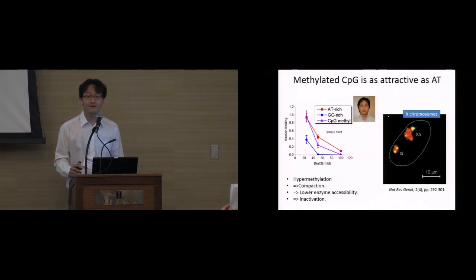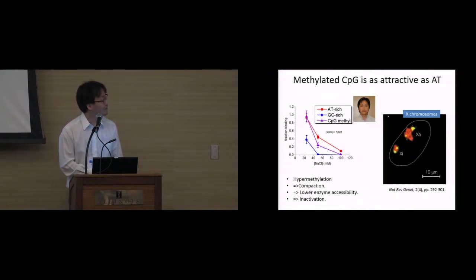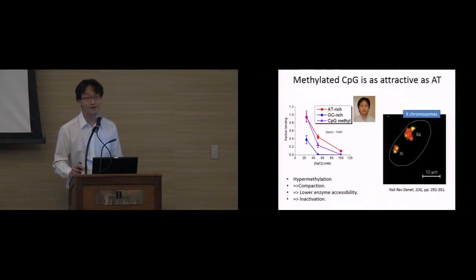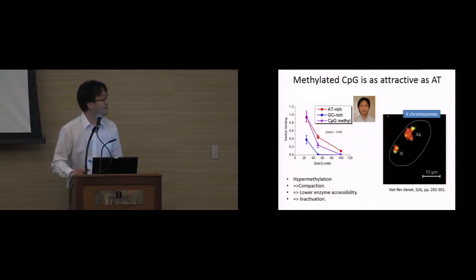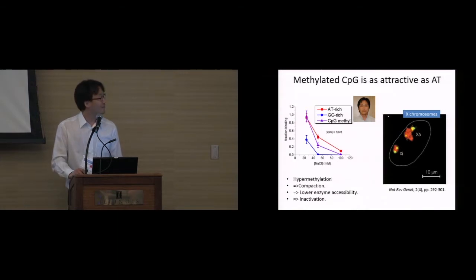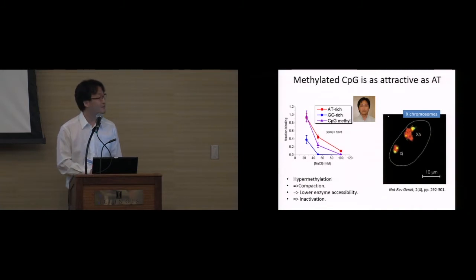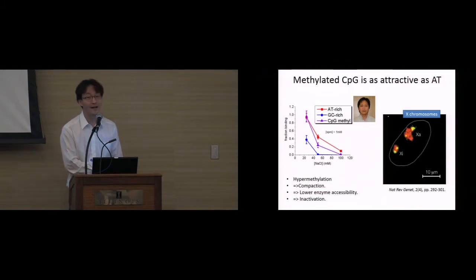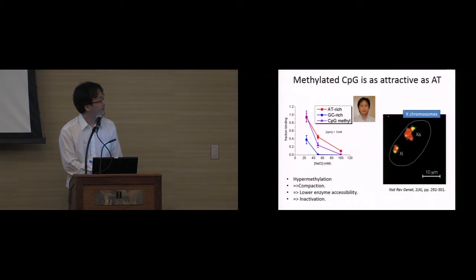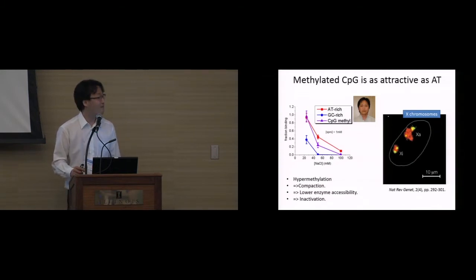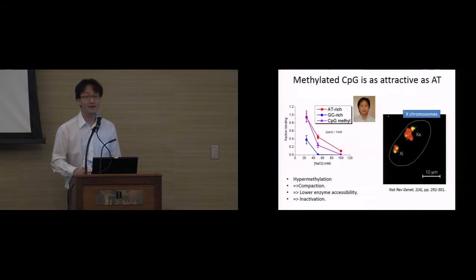And this is also quite consistent with the well-known biological phenomena. For example, human, female cell has two copies of X chromosome. And out of two, always only one X chromosome is active. And the other one is totally inactivated. And the inactivation of X chromosome occurs by hypermethylation on X chromosome. So, this inactive X chromosome is highly methylated. And as you can clearly see here, using imaging here, inactive X chromosome, which is highly methylated, is much more compact than active X chromosome. So, it's not a direct evidence, but we can expect that our, probably, our principle can explain why this phenomenon occurs inside the cell.